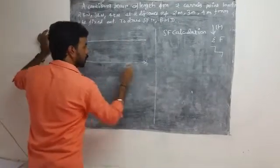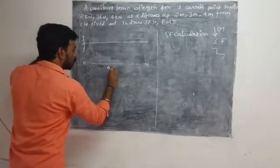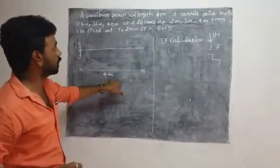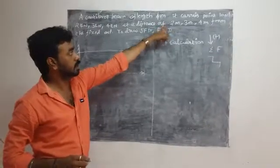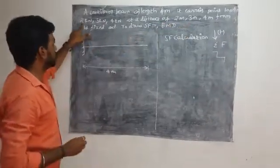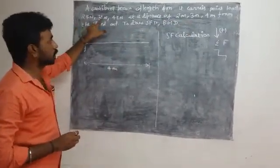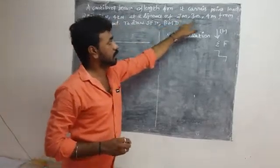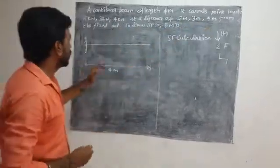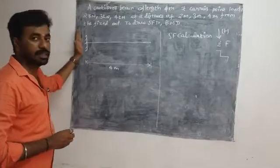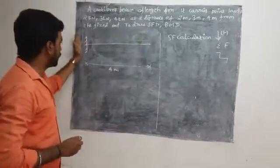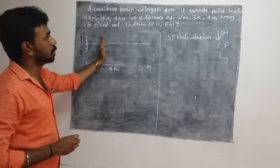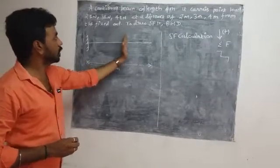Let's take a look. The beam is 4m. This cantilever beam carries point loads. The loads are 2 kg, 3 kg, and 4 kg at distances of 2m, 3m, and 4m from the fixed end. In this frame, the distances are 2m, 3m, and 4m.